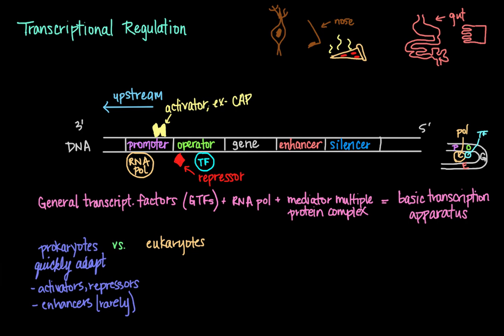In eukaryotes, transcriptional regulation tends to involve a combination of interactions between several transcription factors, which allows for a more sophisticated response to multiple conditions in the environment. Another major difference between eukaryotes and prokaryotes is the fact that eukaryotes have a nuclear envelope, which prevents the simultaneous transcription and translation of a particular gene.